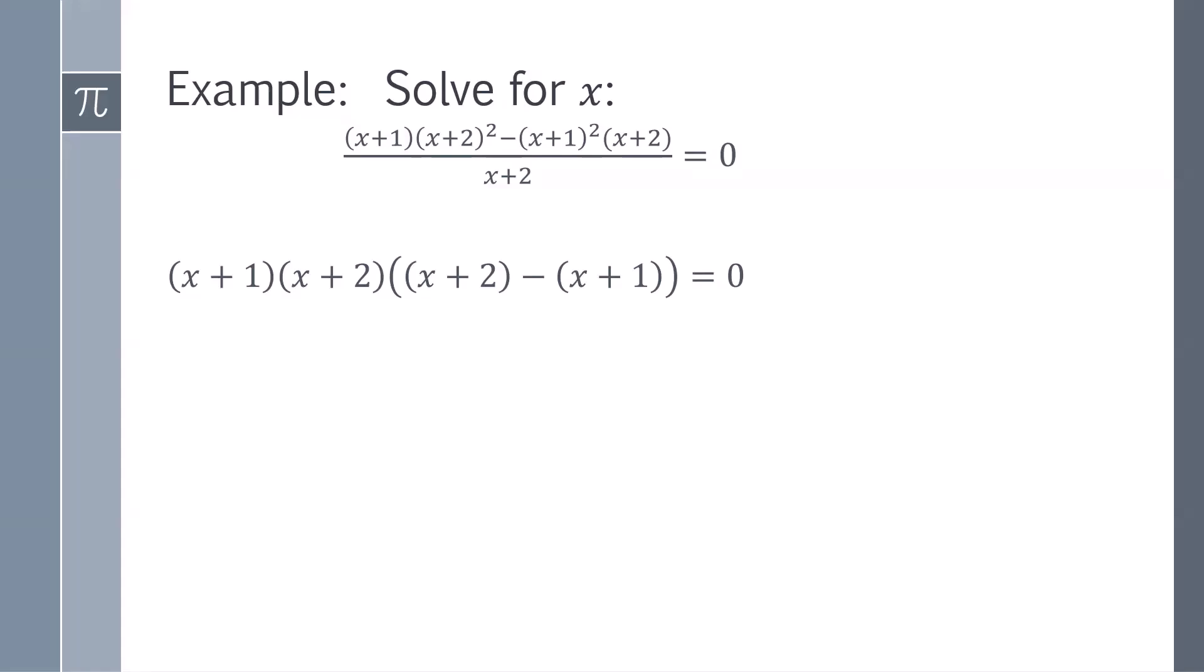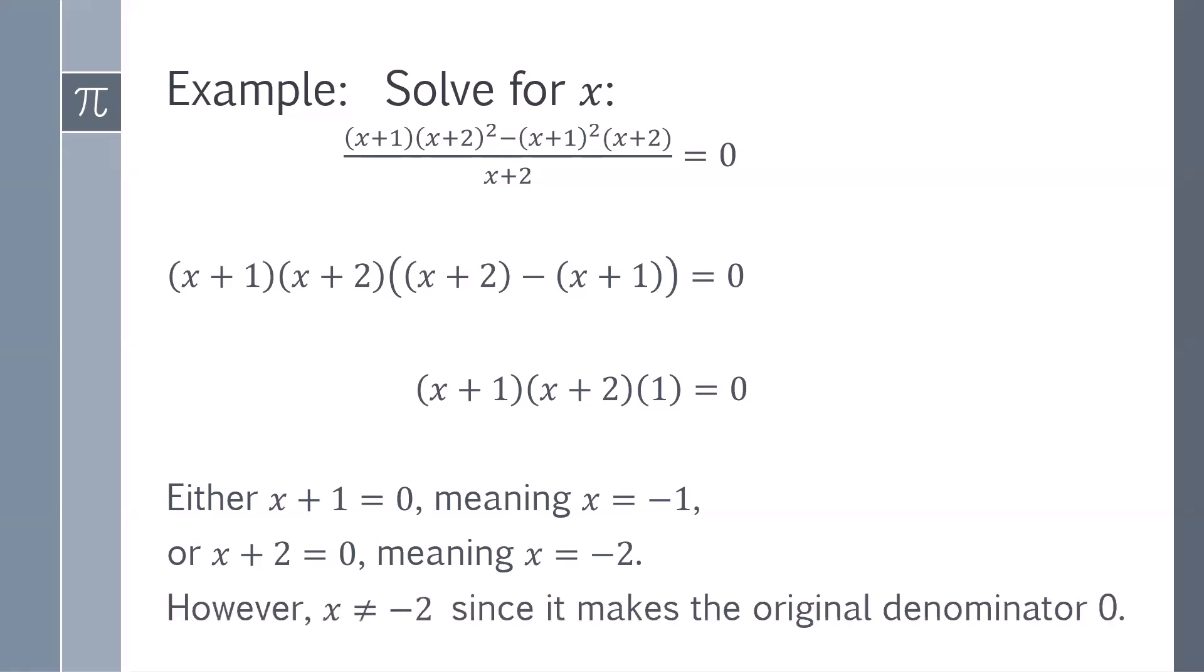If we factor out a common factor of (x + 1) and (x + 2), inside the brackets we end up with a 1. So (x + 1)(x + 2)(1) = 0, meaning x equals -1 or -2. Now we have to be a little careful here because our original equation had a denominator of x + 2, which means x cannot be -2 since it would make the original denominator 0. So our only solution here is x = -1.